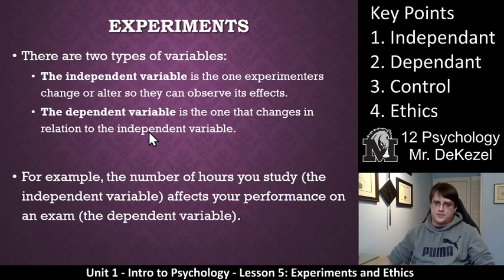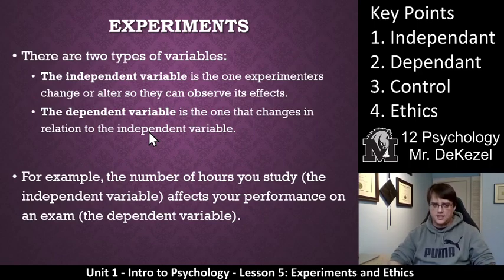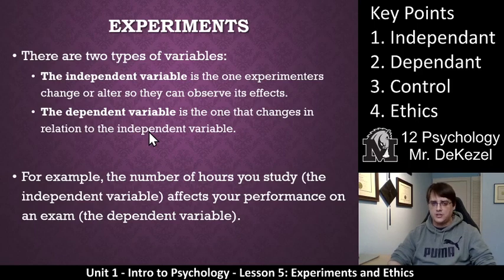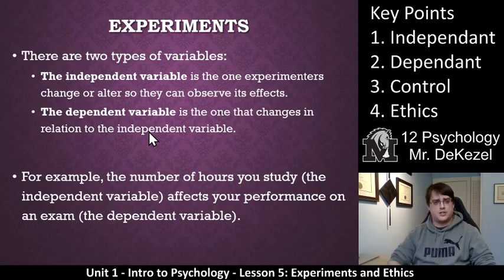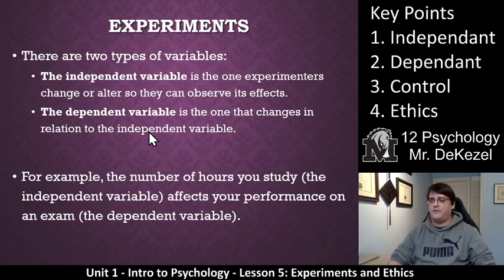There are two types of variables in psychological studies. The first type is the independent variable — this is the variable that the experimenters change or alter so you can observe the effects. In a medical study, this might be changing the dosage. In a psychological study about learning, this might be changing the difficulty of the questions, the time given between questions, or food given during the questions. What you choose to change is the independent variable.